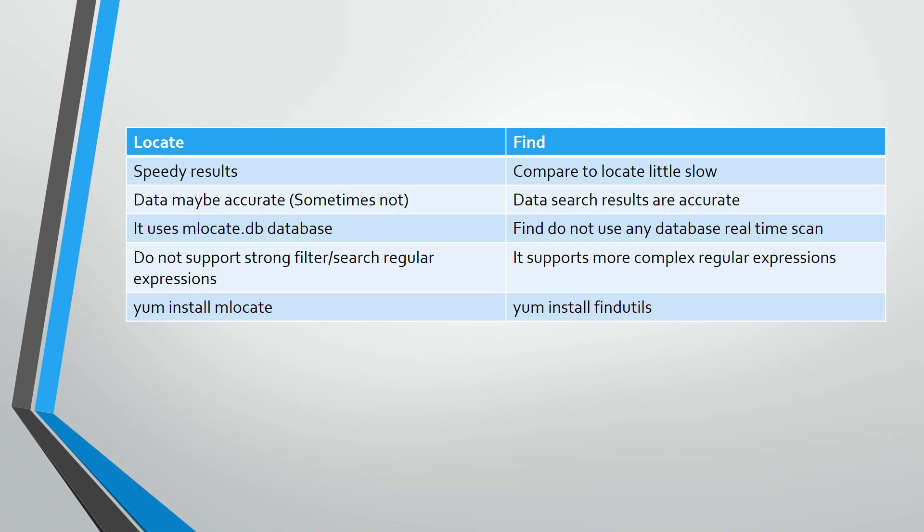Locate does not support strong filters or complex regular expressions. For example, you cannot search by user permissions or ownership using locate — it only supports simple, straightforward name-based searches. With find, you can use complex regular expressions, including min/max path depth, hidden files, and user permissions.